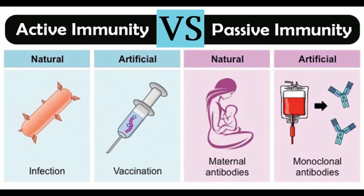Adaptive immunity, also known as acquired immunity, is the third line of defense, which is activated by innate immunity. The immune responses elicited are acquired by experience only, meaning the immune response is induced by the host's response to a foreign antigen or pathogen, or by the transfer of antibodies or lymphocytes specific to the pathogen. It involves defense by immune cells and other activated agents such as cytokines, protecting the body against specific pathogens.